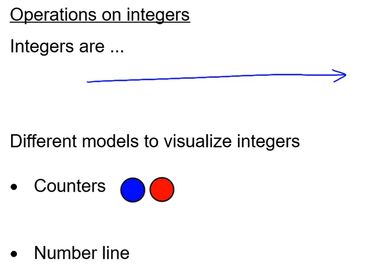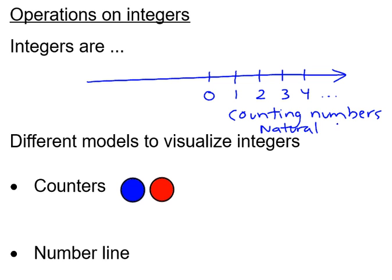The integers are all, we start at 0, and then we're going to include all the counting numbers. 1, 2, 3, 4, and so on. These are counting numbers. And these ones are called the natural.